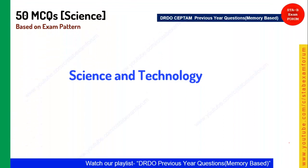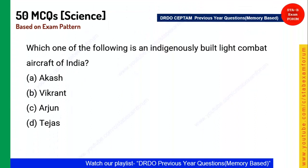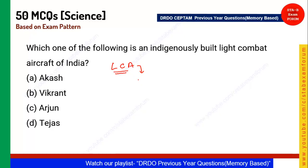We have seen 10 questions each on physics, chemistry, and biology — 30 questions completed. Now let's look at science and technology. First question: Which of the following is the indigenous light combat aircraft of India? Whenever you see LCA, the answer is Tejas. Option D is the correct answer.